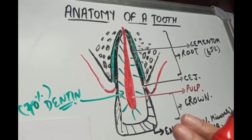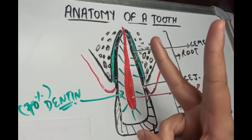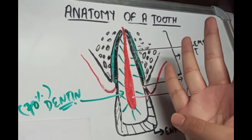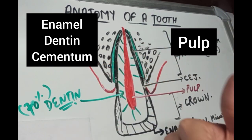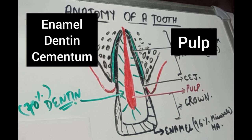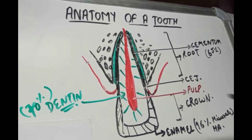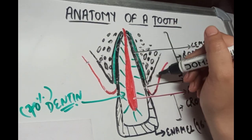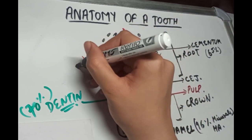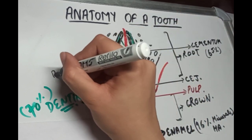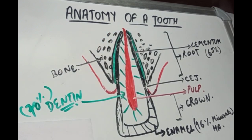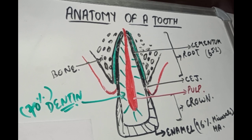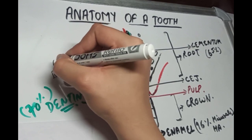So a tooth is formed of four tissues: enamel, dentine, pulp, and cementum. Out of these, enamel, dentine, and cementum are the hard tissues of the teeth, and pulp is the soft tissue. The root portion of the tooth is firmly fixed in the bony process of the jaw. The portion of the bone in which the teeth are attached is called the alveolar process, which contains about 65% minerals.